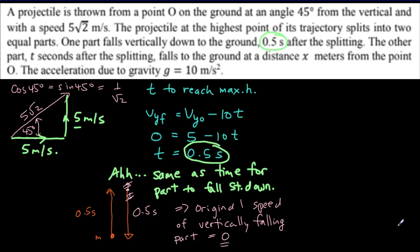Now, that's important because it allows us to use conservation of momentum. So before the split, our mass was at maximum height, and it had no vertical speed. It only had that original horizontal speed of 5 meters per second.